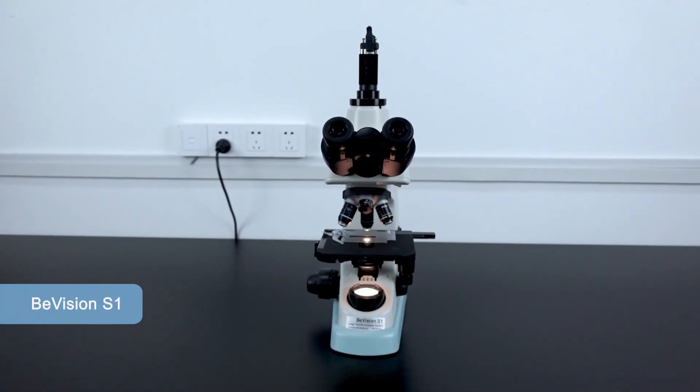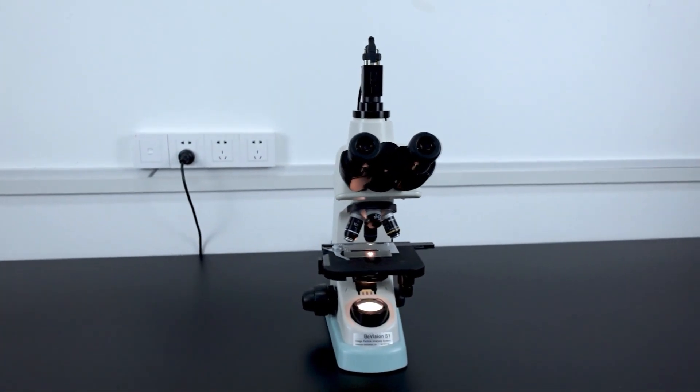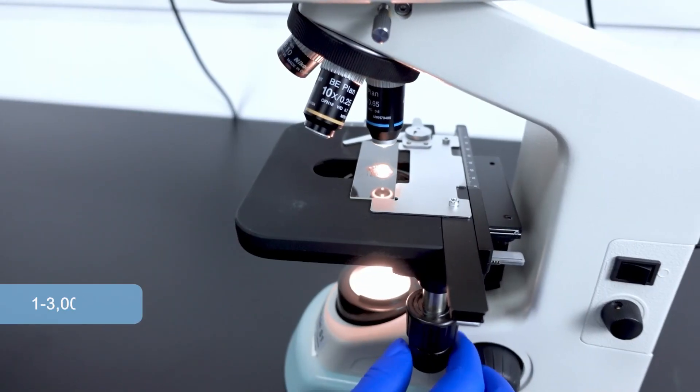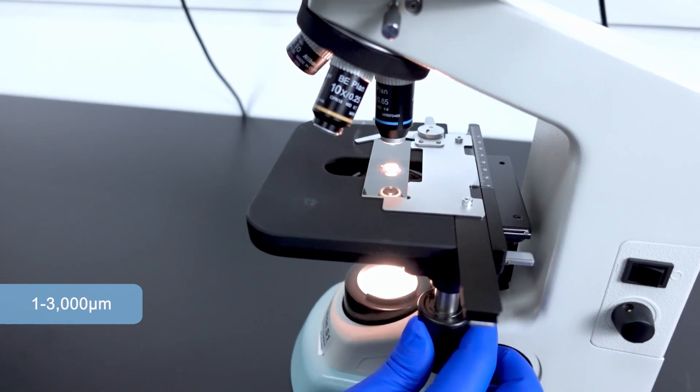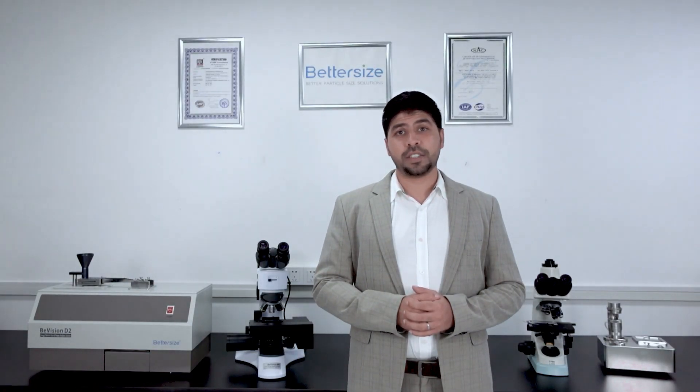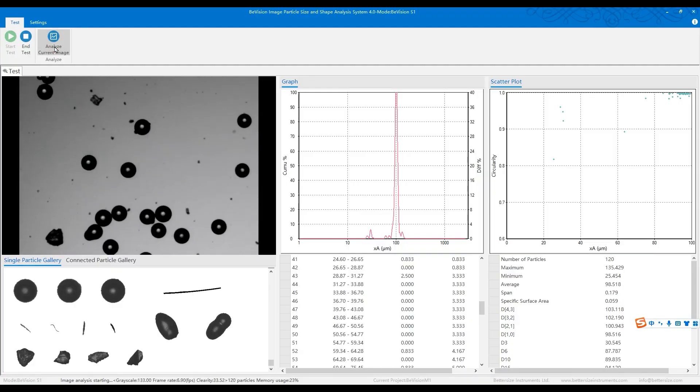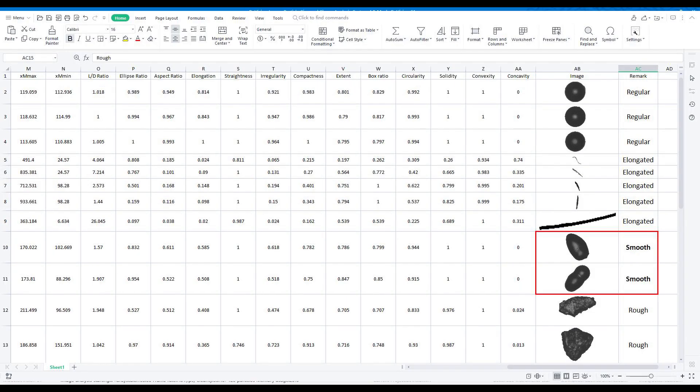The BeVision S1 is a static image analyzer providing high-resolution direct measurement for powder and suspensions in the size range from 1 to 3,000 microns. It allows you to confirm the presence of agglomerates in your sample suspensions to determine if your particles are regular, elongated, smooth, or rough.